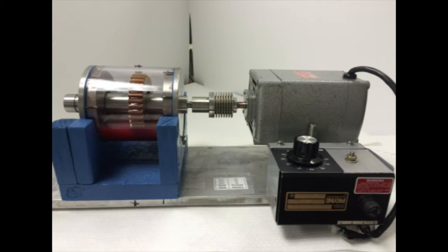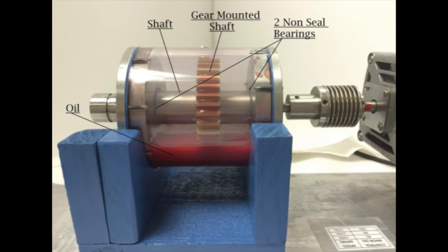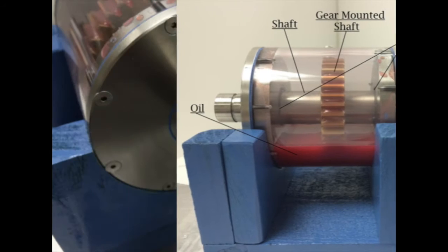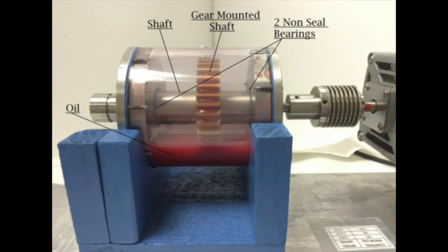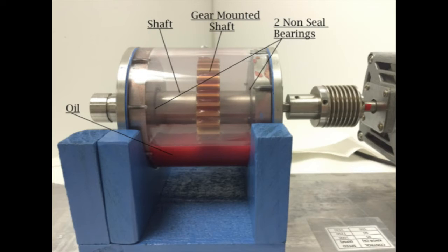To illustrate that the Centrotec seal does not leak, we have constructed this demonstration unit. The sample consists of a single shaft with a gear-mounted mid-shaft, two non-sealed bearings at either end of the shaft, supported by two single-sided Centrotec seals in the housing covers. The lubricant is a lightweight oil.